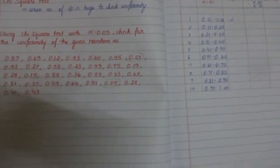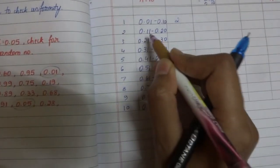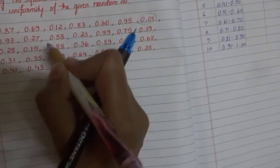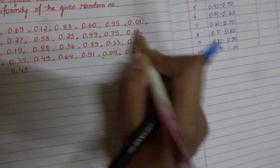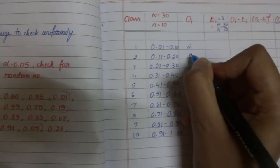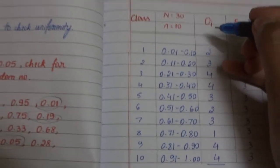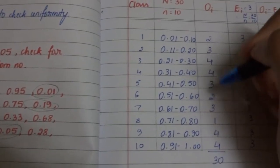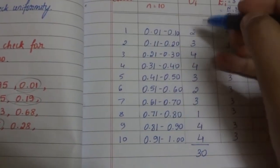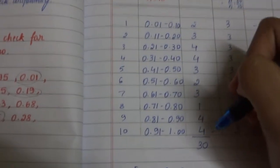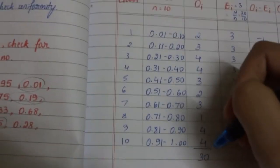In the same way, if you consider the range 0.11 to 0.20, there are 1, 2, 3. So there are 3 random numbers. So by identifying the number of random numbers in each of these ranges, we get these numbers. And when you sum it up, you get back to 30.